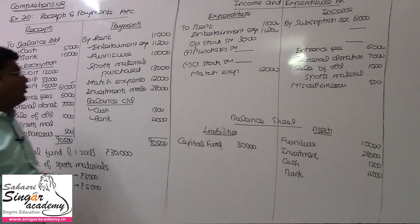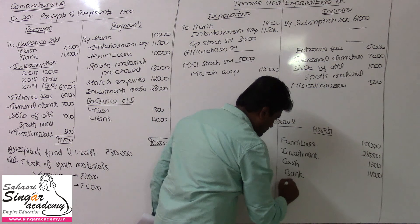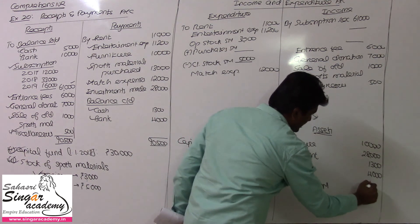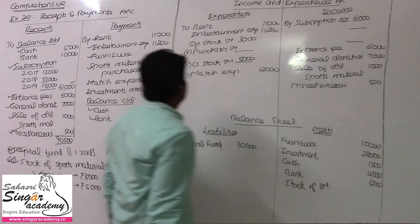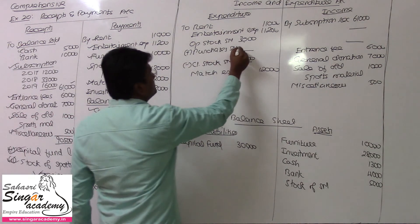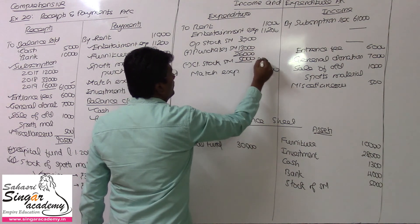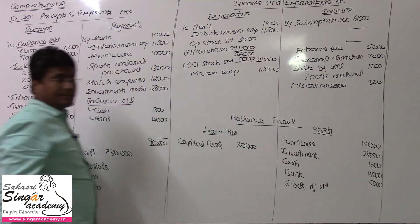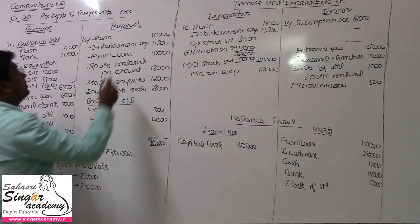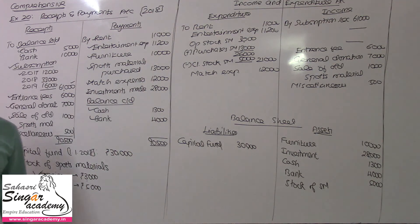Closing stock of sports material: 5,000 rupees. Purchases of sports material: 13,000. So, opening stock 3 plus purchases 13 = 16,000, minus closing stock 5,000 = 11,000. Subscription for 2018 — this is only about 2018.